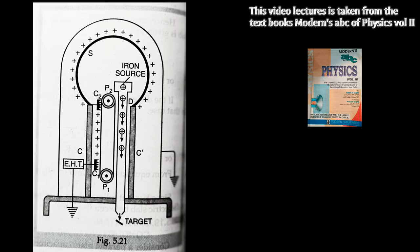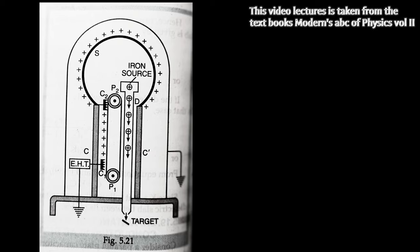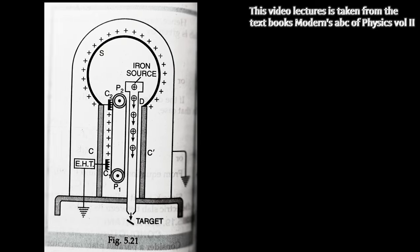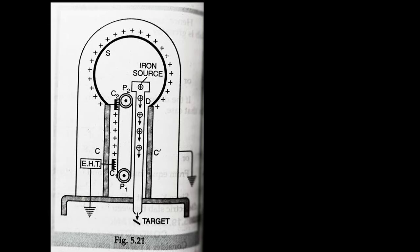An endless belt of insulating material is made to run on two pulleys P1 and P2 with the help of an electric motor. The metal comb C1, called the spray comb, is held near the lower end of the belt.